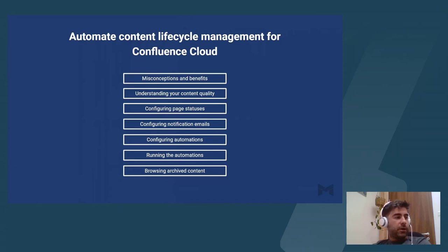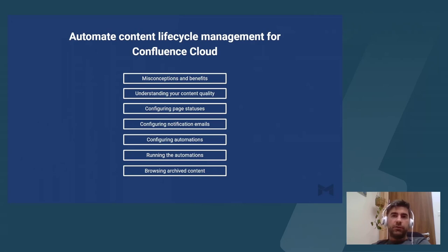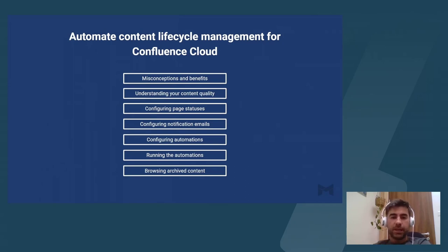First, I want to share some of the misconceptions that I've been hearing that I think you should avoid, and then the benefits that you can gain. Then I want to give you a couple of options to how to understand your content quality in Confluence on the global level, space level, and on the page level as well. And after that, we'll go into automations — configuring automated page statuses, notification emails, and archiving for your Confluence content.